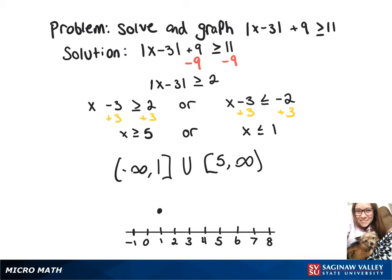So we're going to have a closed circle on the 1, closed circle on the 5, arrow down to negative infinity, and arrow up to infinity.